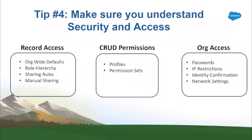Number four: make sure you understand security and access. When I failed my first try on the admin exam, I looked at the scores on each topic and found I had a very low score on security. That's when I knew I didn't fully grasp the concepts of security and access. I had no problem with flows, process builder, or even complex formulas — but security and access was a problem. It took time to deeply learn security because it comes in many forms.